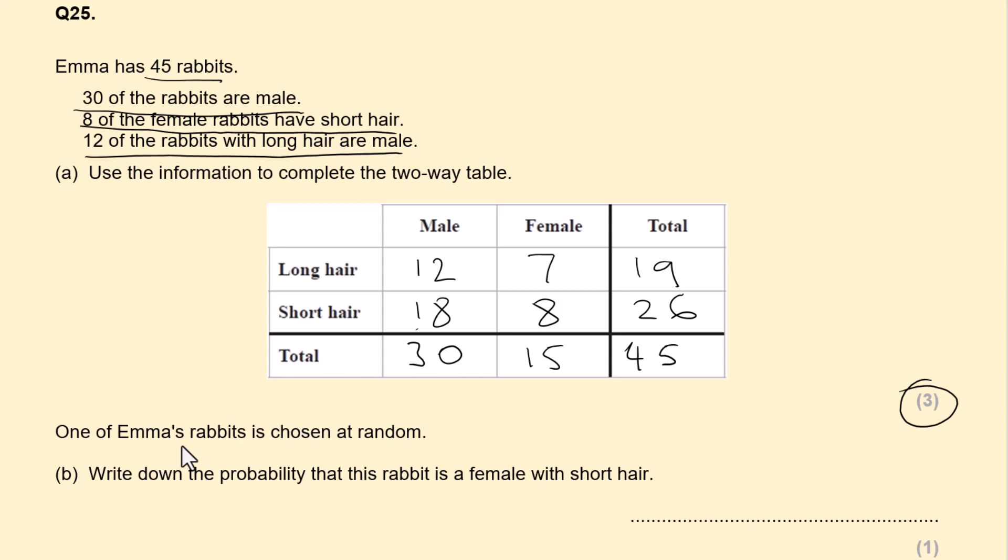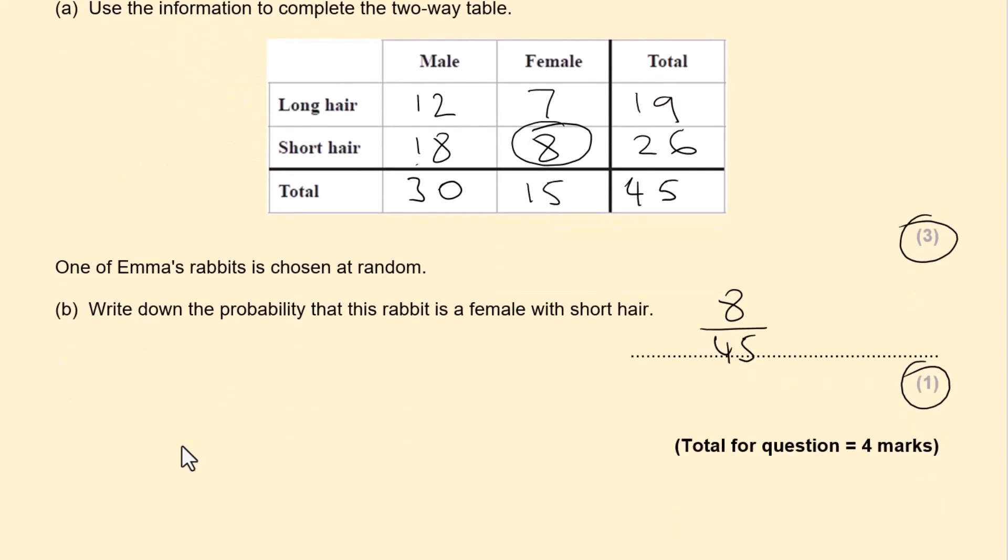One of Emma's rabbits is chosen at random. Write down the probability that this rabbit is a female with short hair. So short hair, female, short hair, which is 8. So we have 8 of them. Out of the total, number of rabbits is 45. This is worth 1 mark. Altogether, this question has 4 marks.